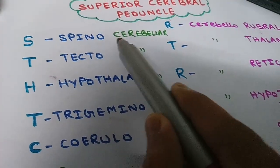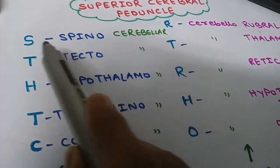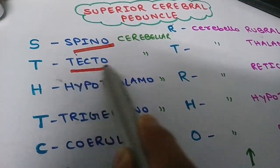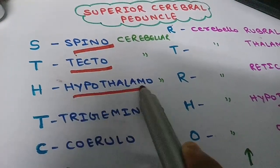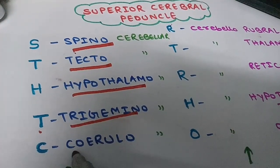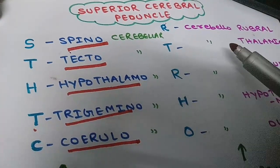So the different fibers: we have Spinocerebellar, Spinocerebellar, Spinocerebellar — it's for spinal cerebellar T4. Tecto — it's for hypothalmo. And T again for trigemino. And C4 query for you — okay. And then...